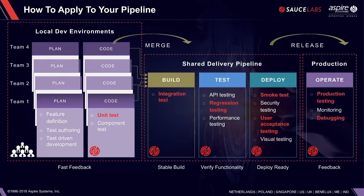To apply this to your pipeline: teams, whether co-located or distributed, will have items from their dev plans such as feature definition, test authoring, test-driven development, and behavior-driven development. From a code perspective, that means creating unit tests and component tests in local dev environments, then merging into the shared delivery pipeline to go across the four phases — build, test, deploy, and operate — in a continuous improvement fashion.